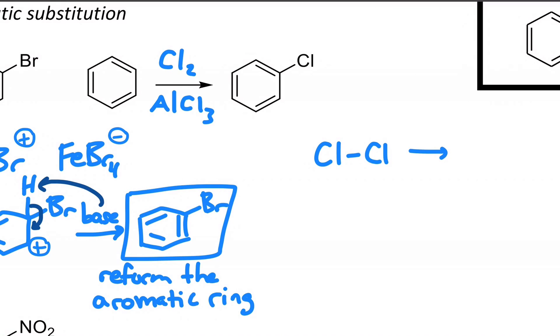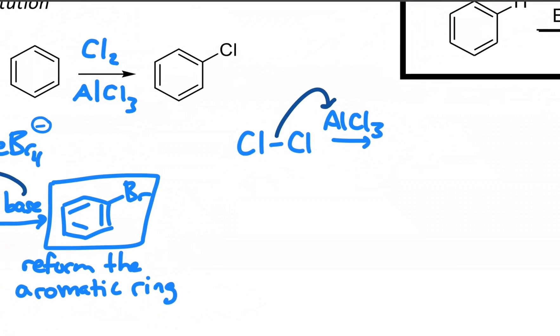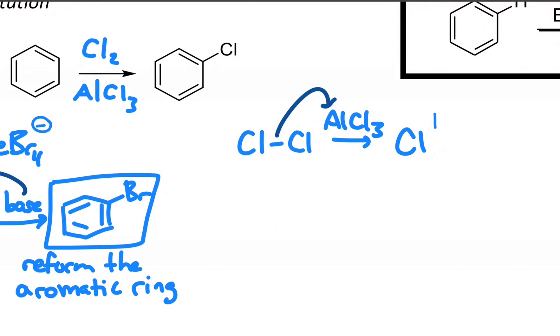A chlorine molecule sees aluminum chloride, strips off one of the chlorides. You get a chlorine cation and then the aluminate anion, and then benzene will see the chlorine as a cation.